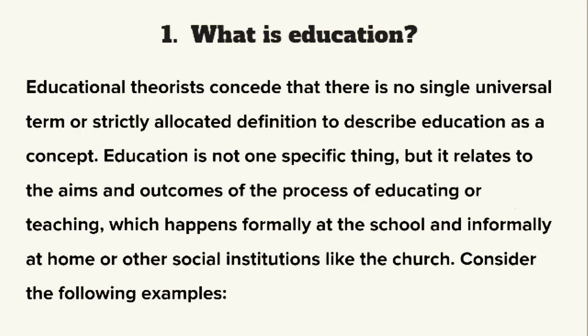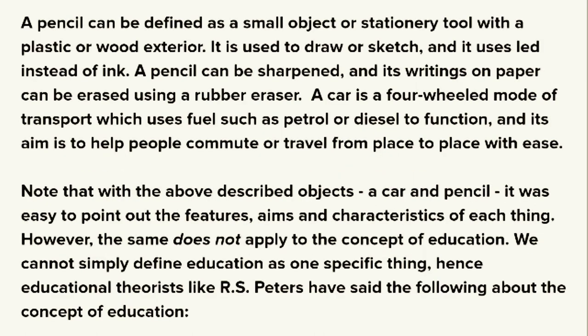Educational theorists concede that there is no single universal term or strictly allocated definition to describe education as a concept. Education is not one specific thing but it relates to the aims and outcomes of the process of educating or teaching, which happens formally at the school and informally at home or other social institutions like the church. Consider the following examples. A pencil can be defined as a small object or stationary tool with a plastic or wood exterior, used to draw or sketch using lead instead of ink, and its writings can be erased using a rubber eraser. A car is a four-wheeled mode of transport which uses fuel such as petrol or diesel, and its aim is to help people commute or travel from place to place with ease.